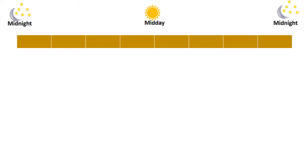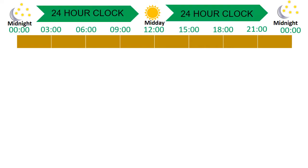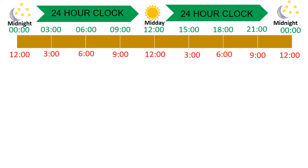First is the 24-hour clock — the time is shown as how many hours and minutes since midnight. Next is AM/PM, or you can say the 12-hour clock, where the day is divided into two parts.